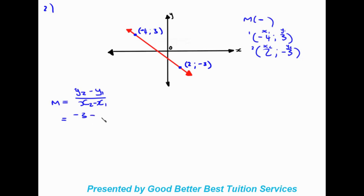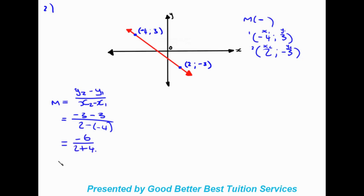Substituting into m equals y2 minus y1 over x2 minus x1: y2 is negative three, minus y1 which is three, over x2 which is two, minus negative four in brackets. Working this out: we get negative six on top, and two plus four equals six on the bottom, giving us negative six over six, which is negative one. Writing out the equation: y equals negative x plus c.